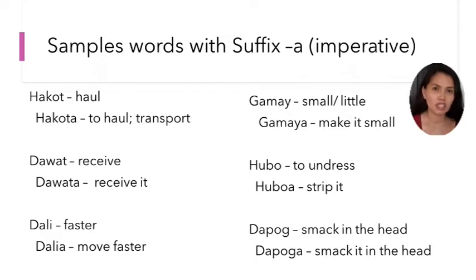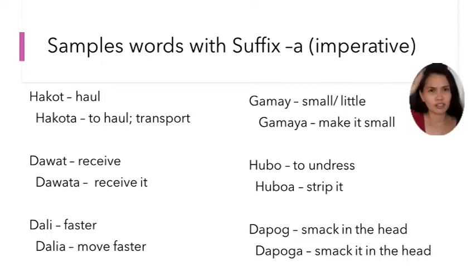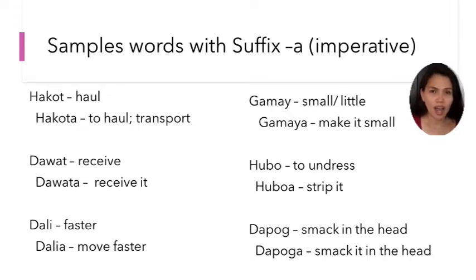Gamaya means make it small or put small in volume — put little. Next, 'Hubo' means undress. 'Hubua' means to remove it or strip it. Then 'Dapug' is a smack in the head. 'Dapuga' means smack it in the head.